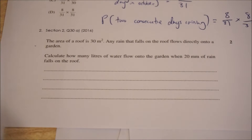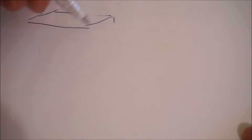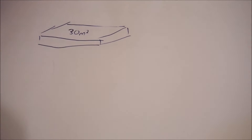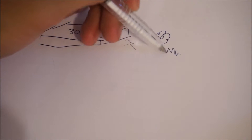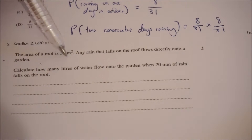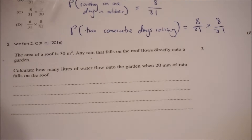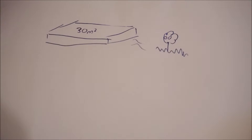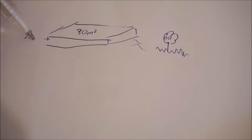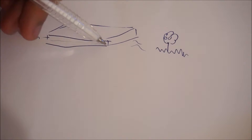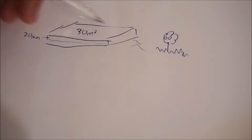Anytime I get a question like this, I like to draw it out. So basically we have a roof, and I know that the area of the roof is 30 square meters, and that water is going to flow into a garden. The question is asking how many liters of water flow into the garden when 20 millimeters of rain falls onto the roof. It's telling me that the height of the water falling is 20 millimeters, and I want to find the volume of water collected on the roof.